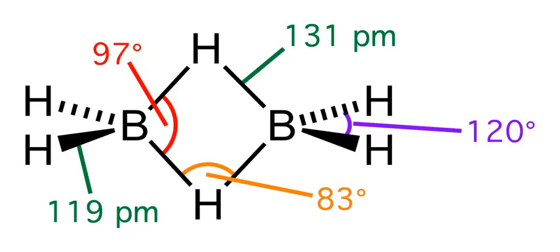The lengths of the BH bridge bonds and the BH terminal bonds are 1.33 and 1.19 angstroms respectively, and this difference in the lengths of these bonds reflects the difference in their strengths, the BH bridge bonds being relatively weaker. The weakness of the BH bridge versus BH terminal bonds is indicated by their vibrational signatures in the infrared spectrum, being approximately 2,100 and 2,500 wavenumbers respectively.